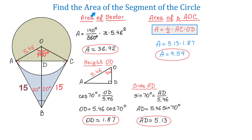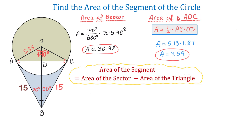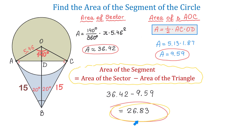Now that we have the area of the sector and the area of the triangle, we can find the area of the segment. The area of the segment equals the area of the sector minus the area of the triangle: 36.42 minus 9.59 equals 26.83 square units. So the area of the segment is 26.83 square units. Thank you for watching — please subscribe, give a like, leave a comment, and come back for more math.